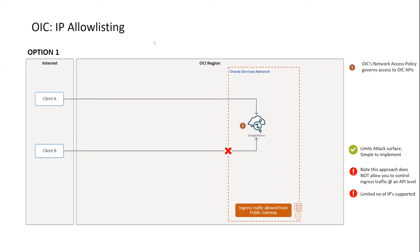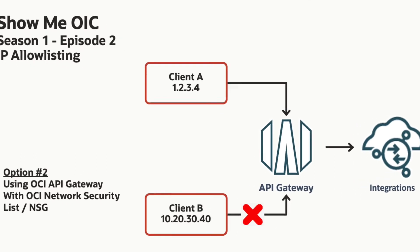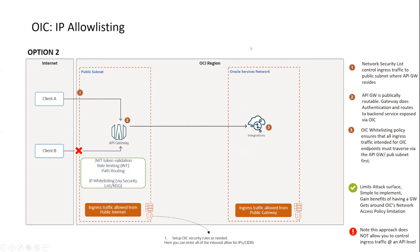The second option is to add an API gateway in front of your OIC instance. The API gateway sits in a public subnet, so it's publicly routable, and your clients can hit the gateway, which then has a back-end route to your OIC endpoints. IP allow-listing in this case is done at the security list or network security group attached to that public subnet, and you can define as many rules as you want, bypassing the 15-IP restriction.